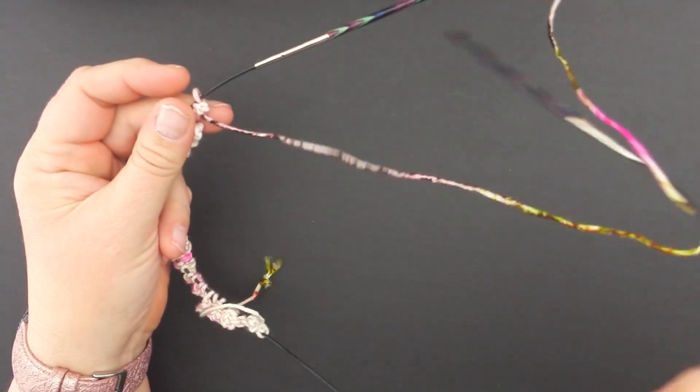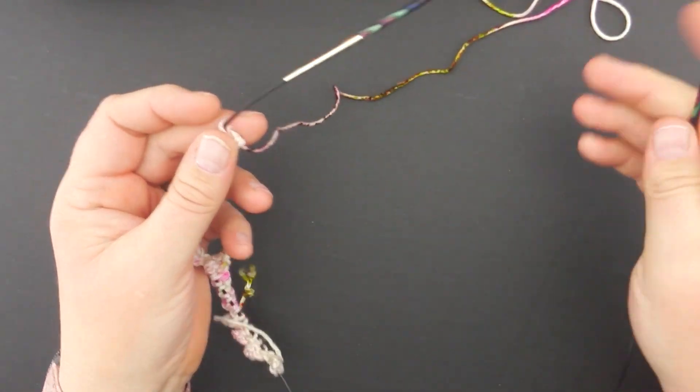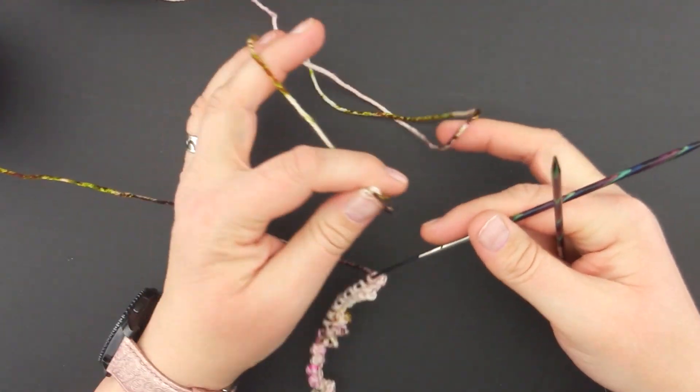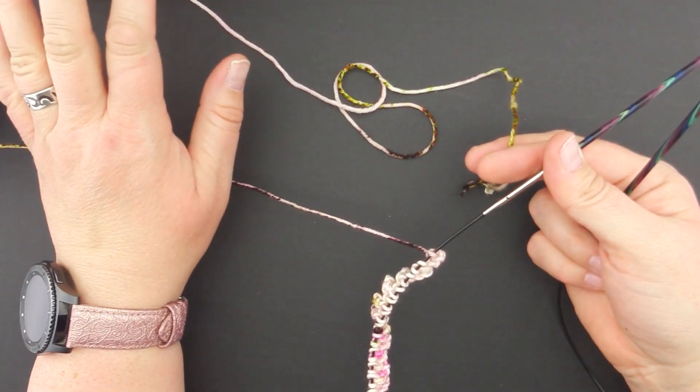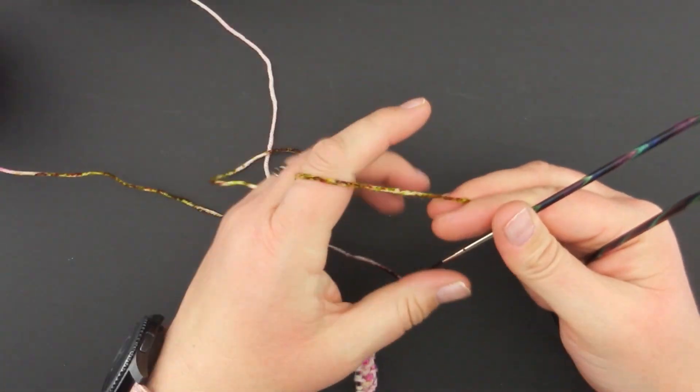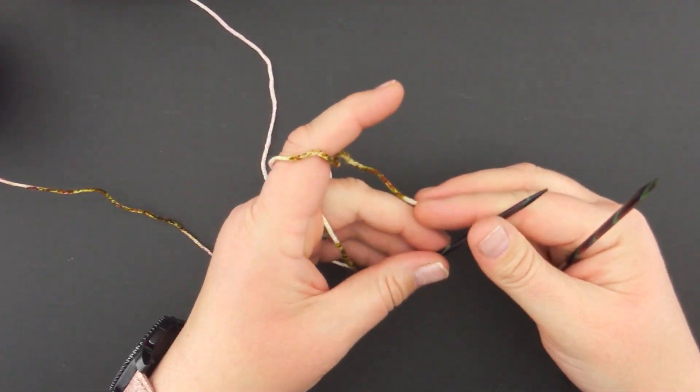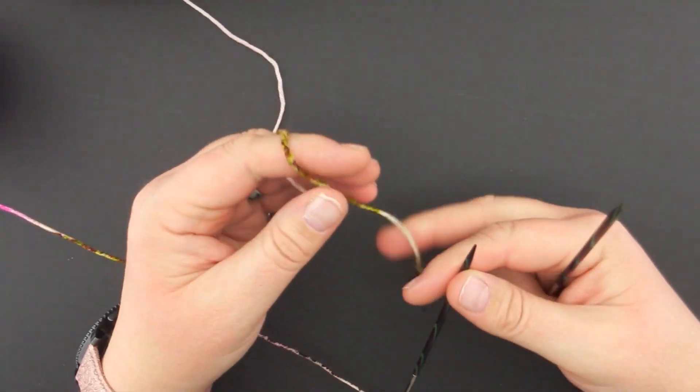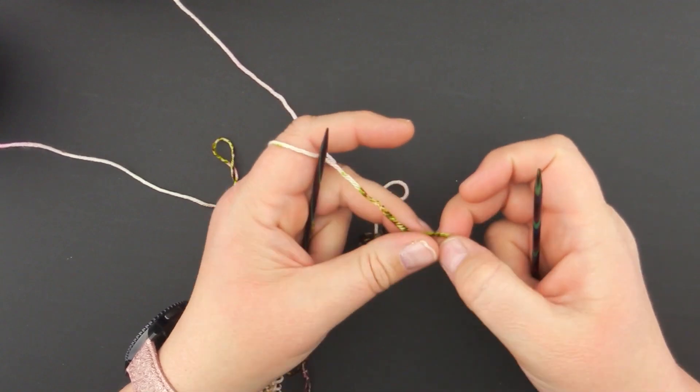So now I'm just going to slide these down and I'm going to take my next ball of yarn. You could pull from the inside and the outside of the ball. I happen to have two different balls. And then I'm going to go ahead and do the picot cast on for the next cuff. Then we'll join it together in the round.